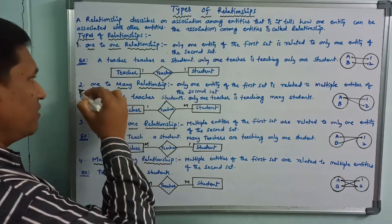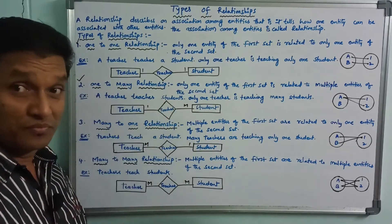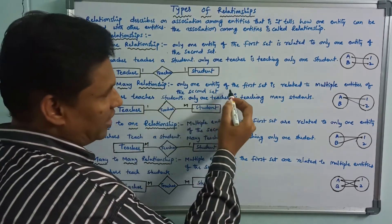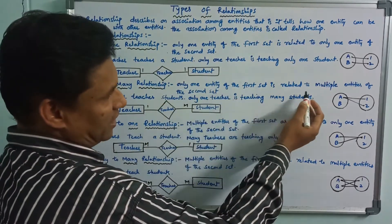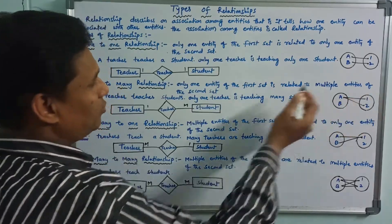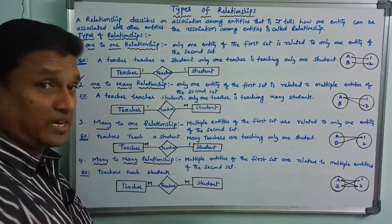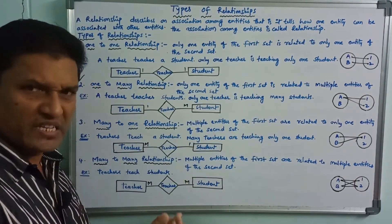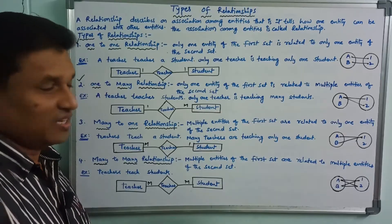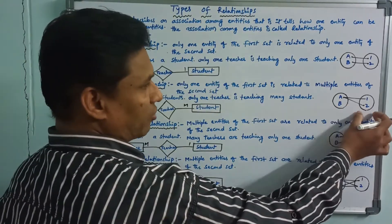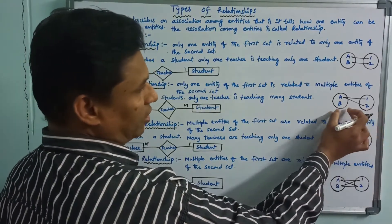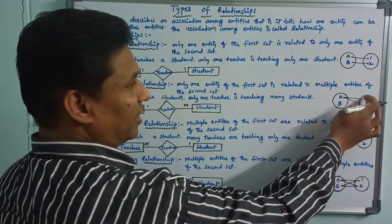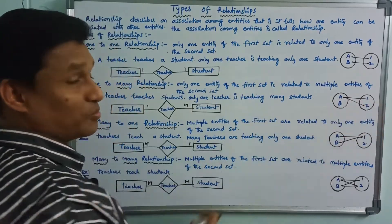Second one: one-to-many relationship. Only one entity of the first set is related to multiple entities of the second set. In the diagram, one entity on the left is connected to multiple entities on the right.